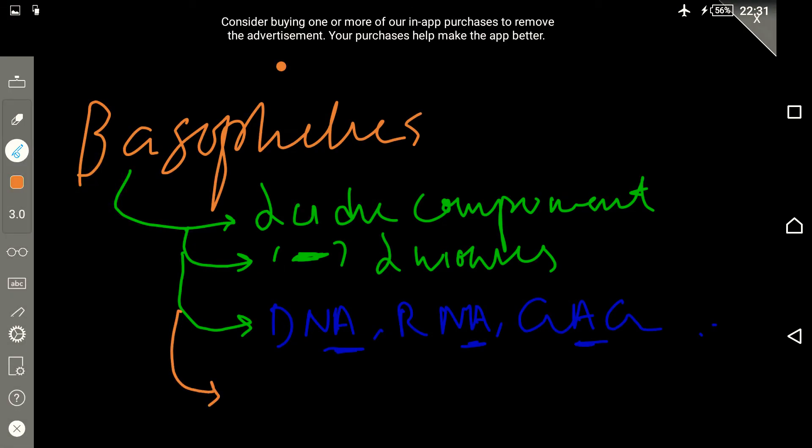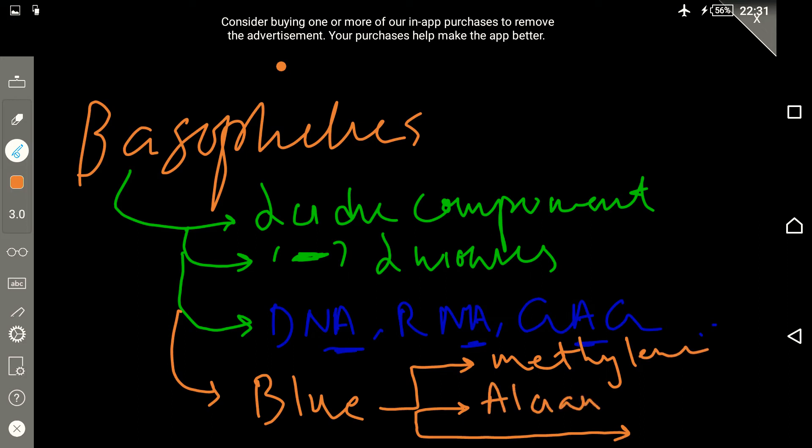These specific basophilic dyes that are used are called blue dyes. There are three blue dyes that are usually used. First is methylene, second is alcien.